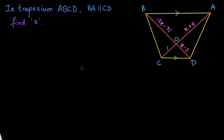So before we proceed to the solution, let us proceed now. In the figure, we see that the lines BA and CD are parallel to each other. Because of that, I can say that this angle, which is angle OCD, is equal to the angle OAB because they are alternate angles.